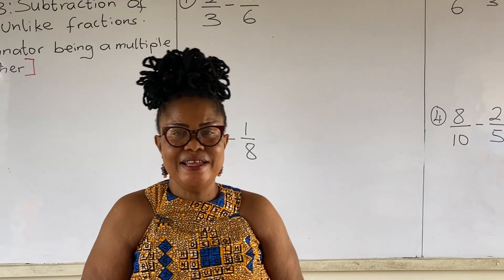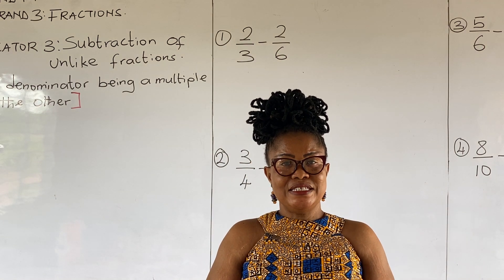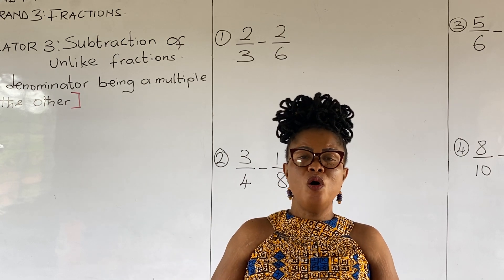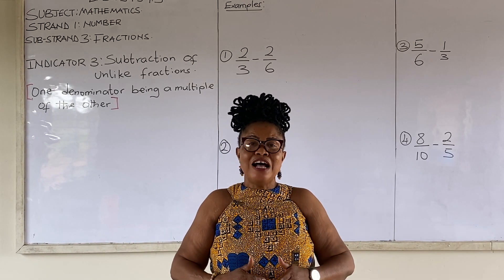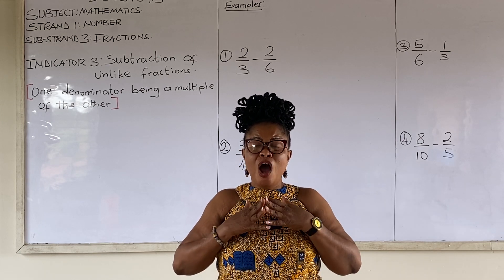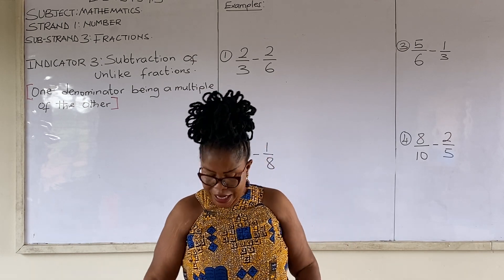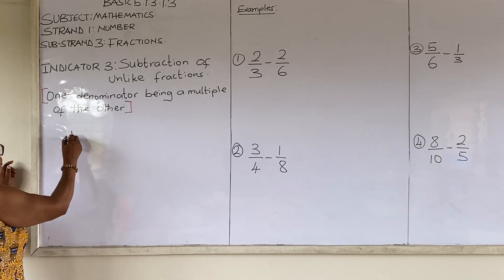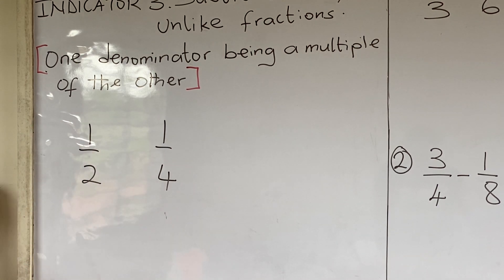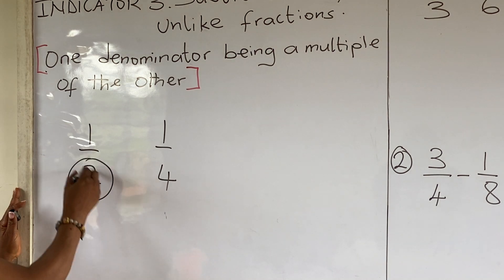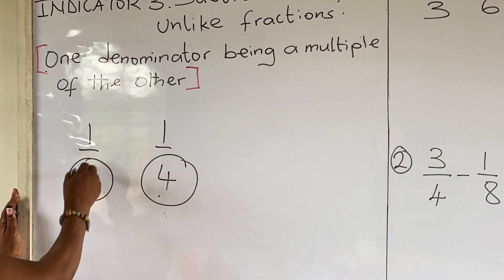In today's lesson, we are going to subtract unlike fractions where one denominator is a multiple of the other. When we talk of unlike fractions, unlike fractions are two fractions which the denominators are different. Here, one denominator is a multiple of the other.